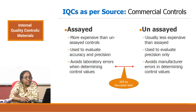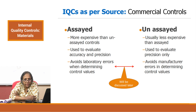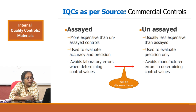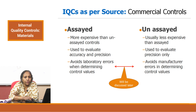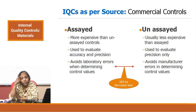Assayed controls are more expensive than unassayed controls and are used to evaluate accuracy and precision. Accuracy shifts can be determined since some idea of the mean is already provided, giving you an idea about shifts or changes in accuracy. It also avoids laboratory errors when determining control values. Unassayed controls are usually less expensive than assayed controls, are used to evaluate only precision, and avoid manufacturer errors in determining control values.